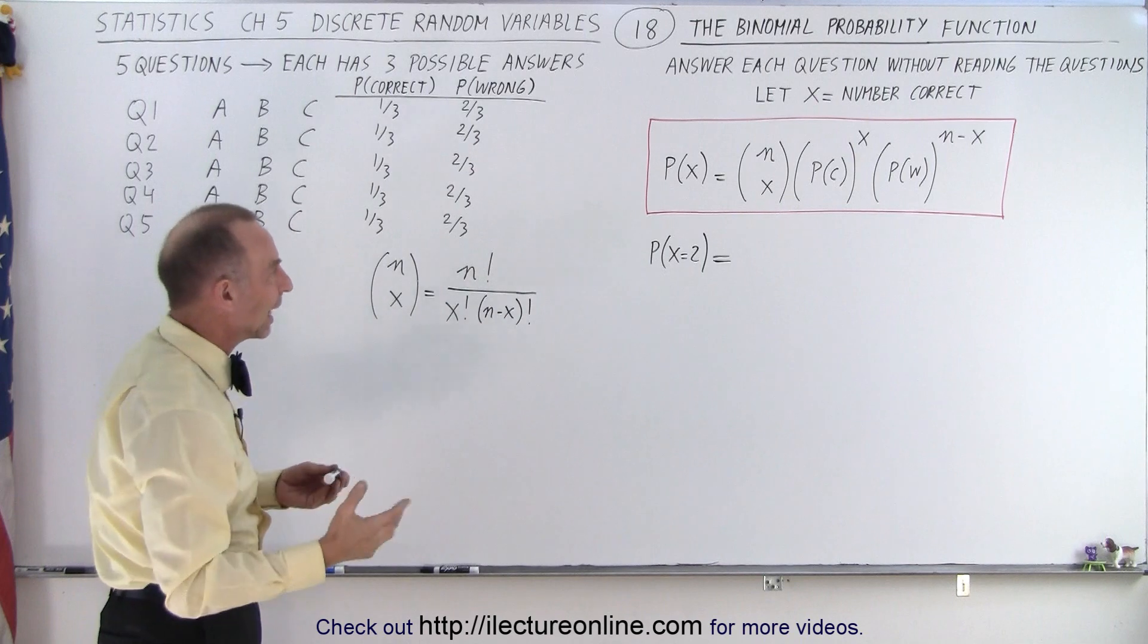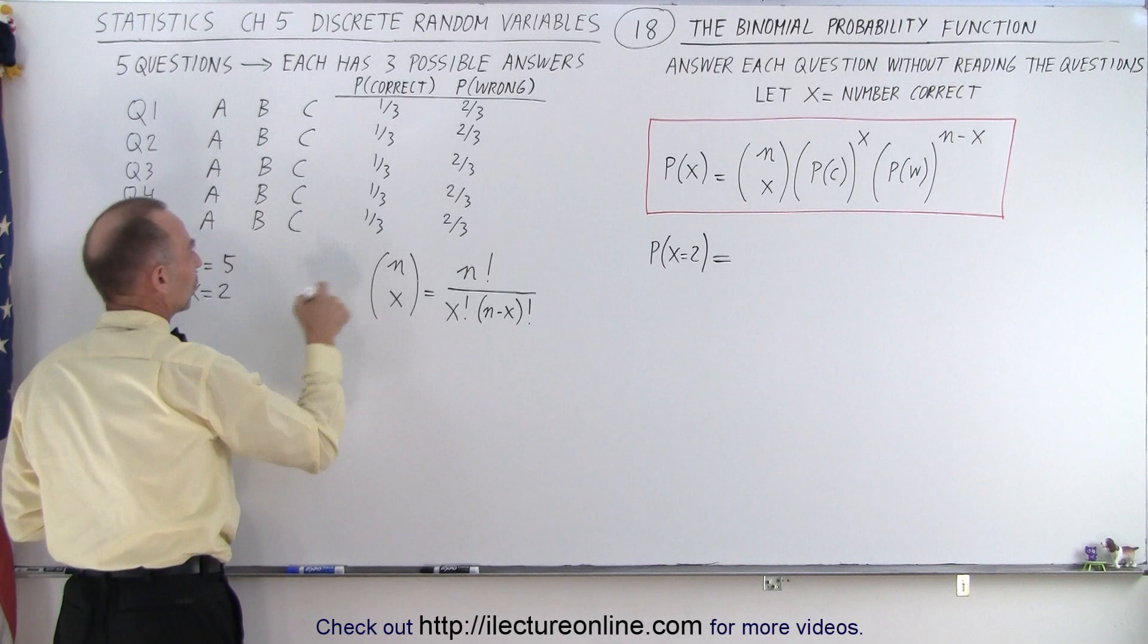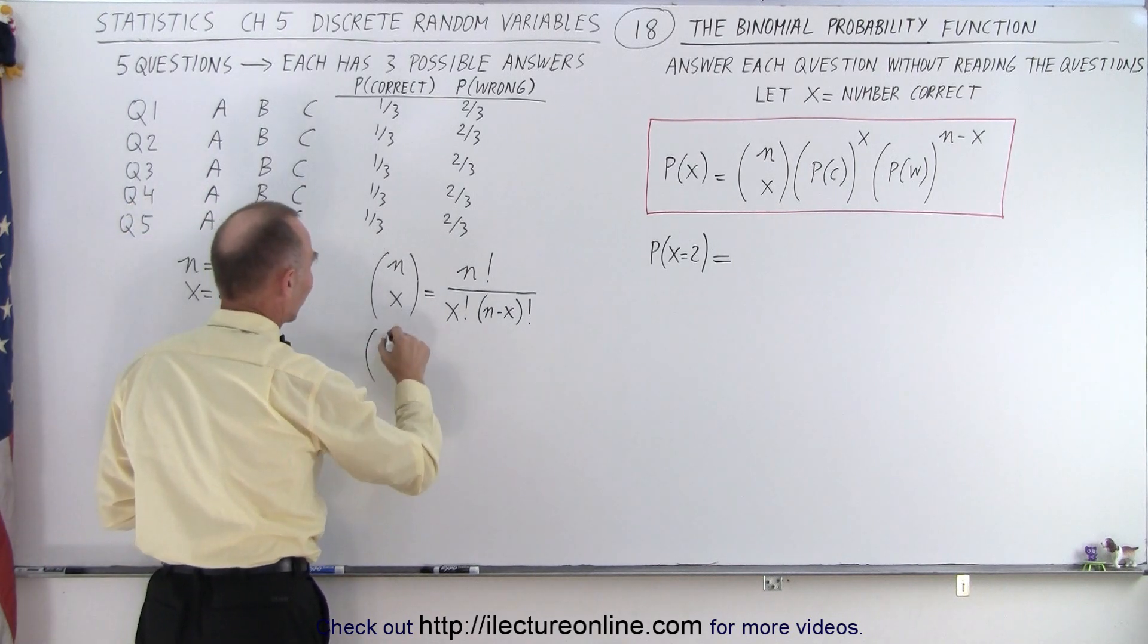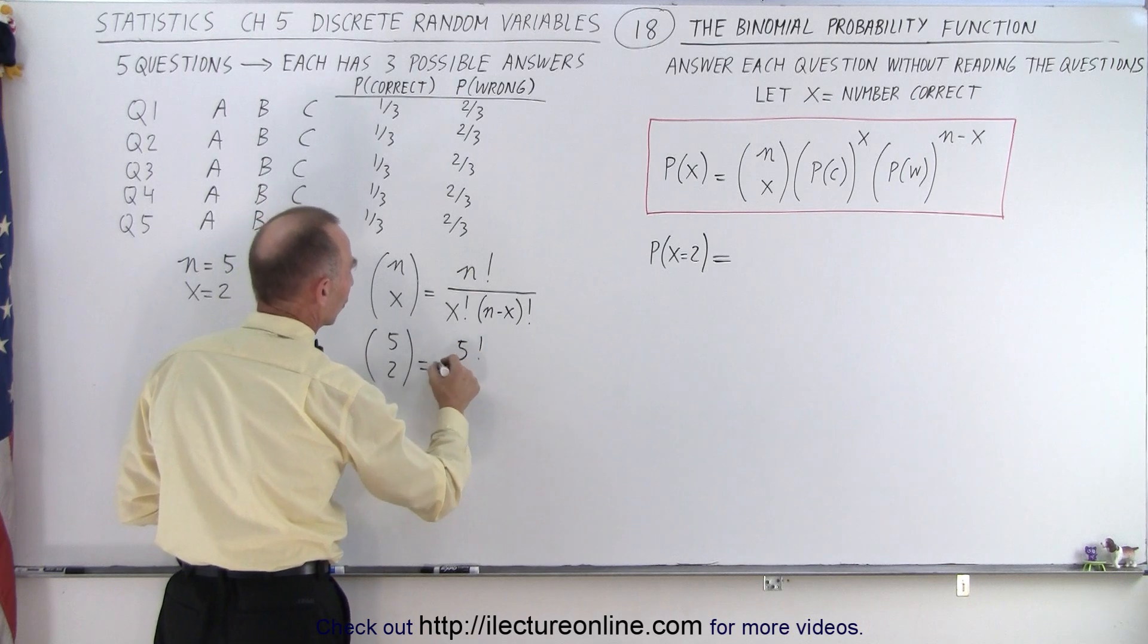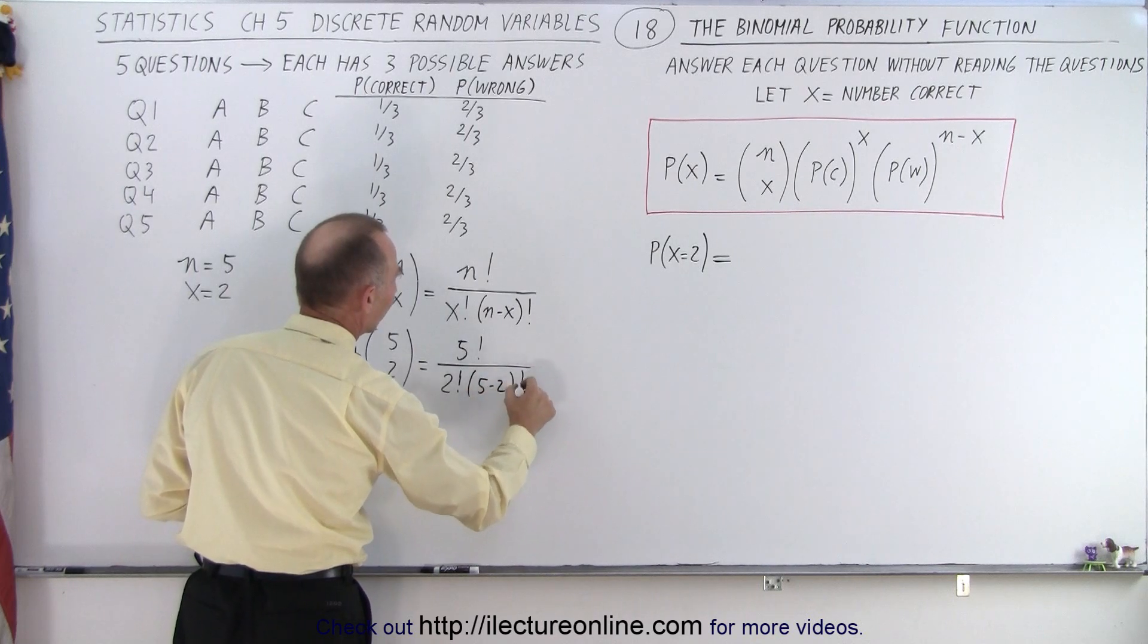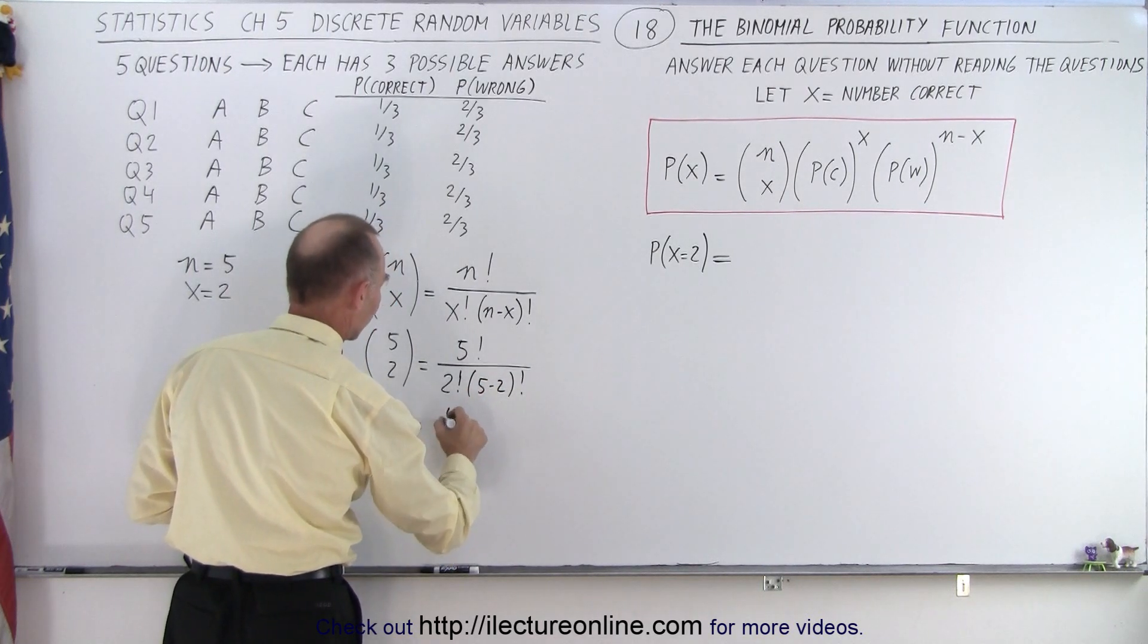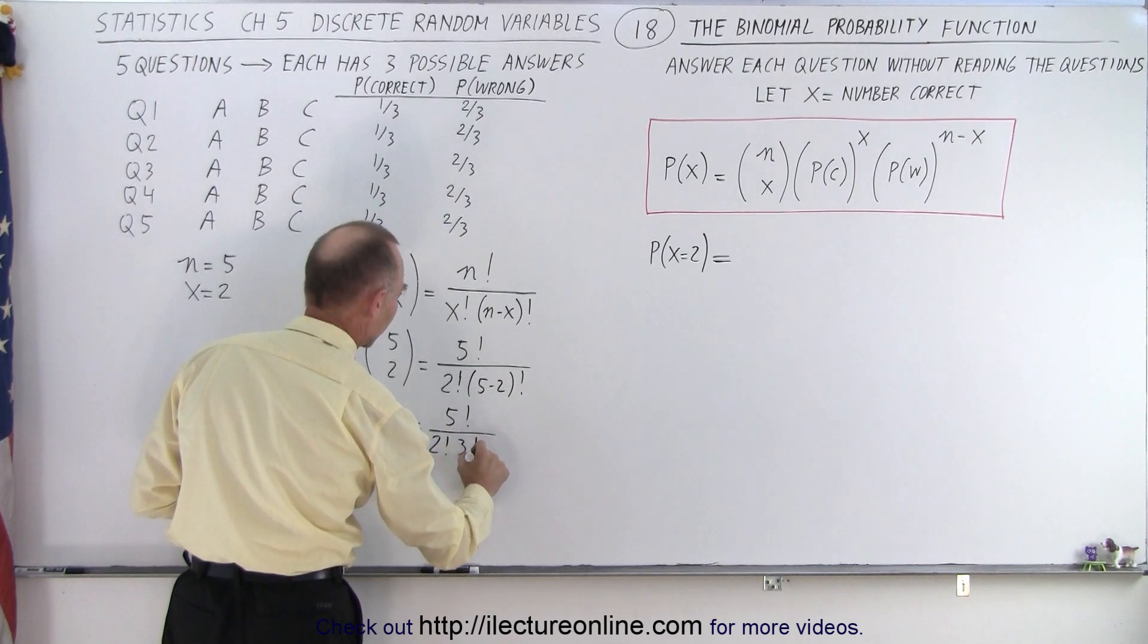Let's do it in the case where x equals two. So in this case, n equals five, x equals two. So we apply that. So here we have (5 choose 2), which is equal to five factorial divided by x factorial, which is two factorial, divided by five minus two factorial. So this ends up being five factorial divided by two factorial and divided by three factorial.